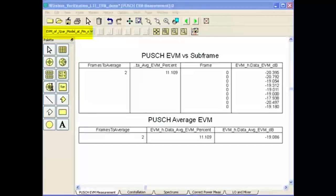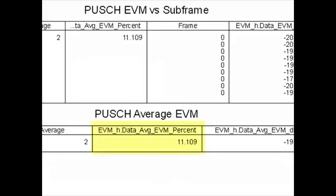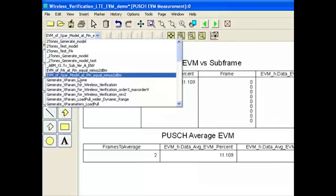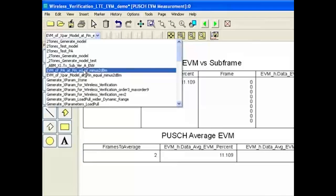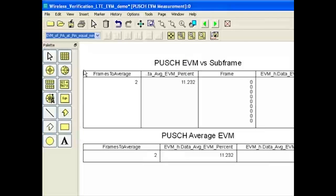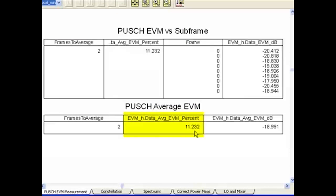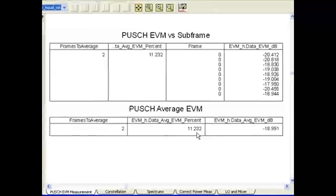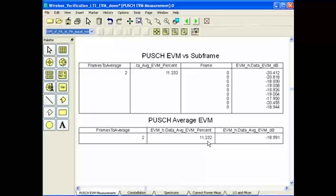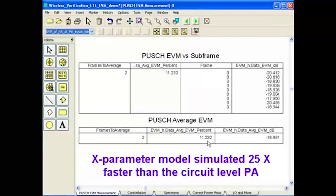Here is the EVM results using the X parameter model. EVM is shown to be 11.1%. Next, if I switch to the data file of the circuit level PA, I see that EVM is 11.2%. So we have 11.1% using the X parameter model versus 11.2% using the circuit level PA. Again, this clearly illustrates the accuracy of the model. And it's important to mention that the simulation speed using the X parameter model was 25 times faster than that using the circuit level PA.